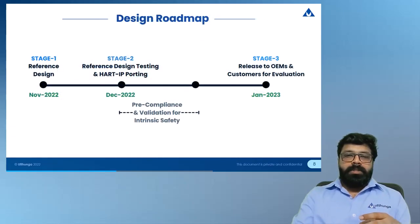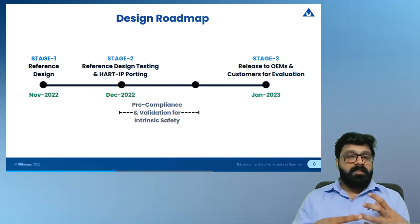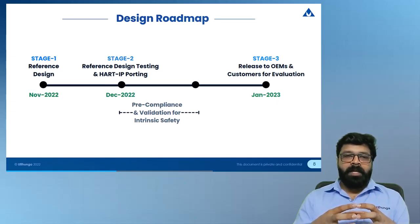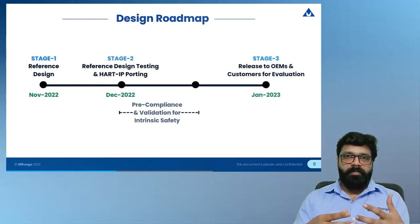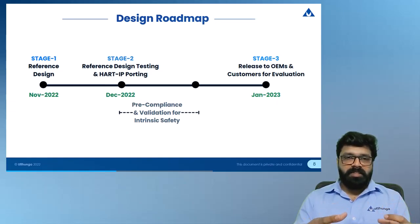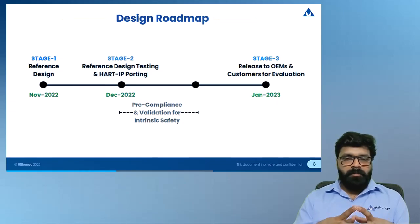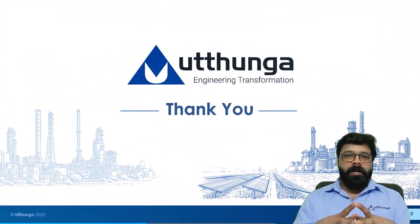The design roadmap started in October, with the complete design finished by November. We are currently in the phase of porting HART IP, in the testing phase, and hardware engineers are working on pre-compliance and intrinsic safety validation. By January this will be available for customer evaluations. For more details, please feel free to contact FieldComm Group or utunga.com. Thank you.